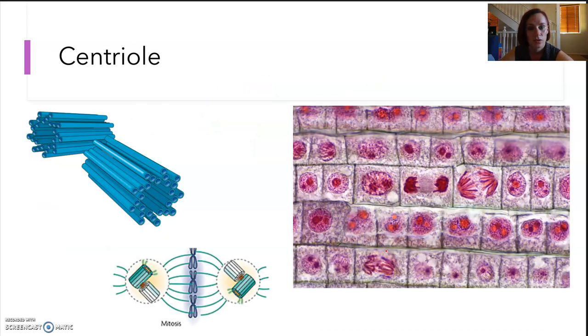Centrioles, these are used to pull apart the genetic material during mitosis, and you can see them very clearly in some mitosis cells there.